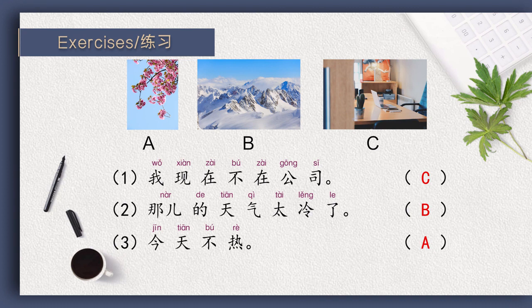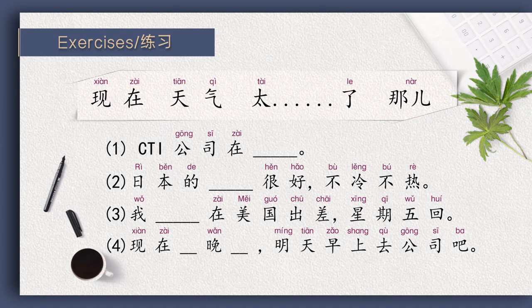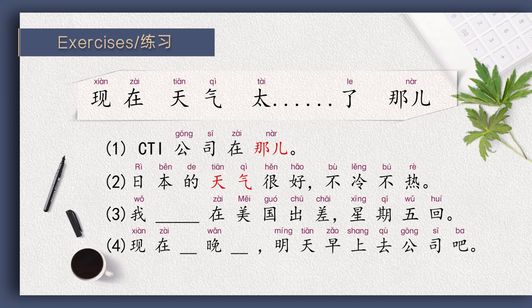Then please fill in the blanks with the given words. CTI公司在那儿。 日本的天气很好，不冷不热。 我现在在美国出差，星期五回。 现在太晚了，明天早上去公司吧。